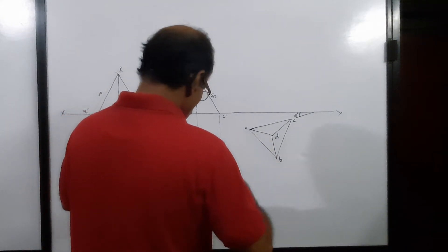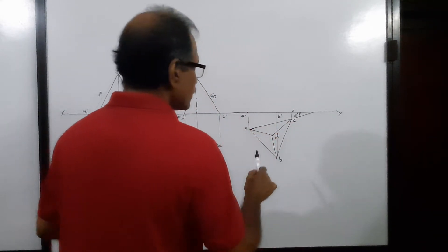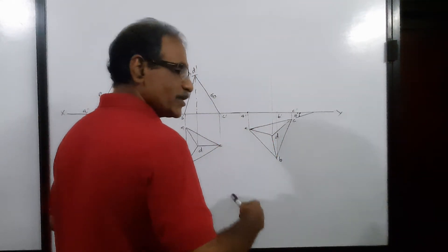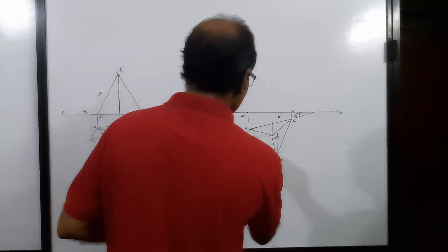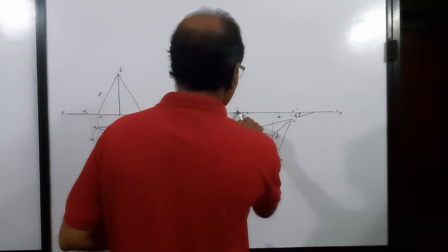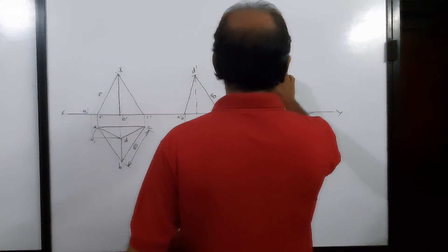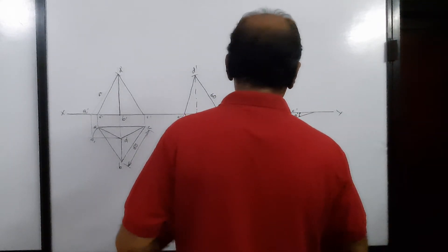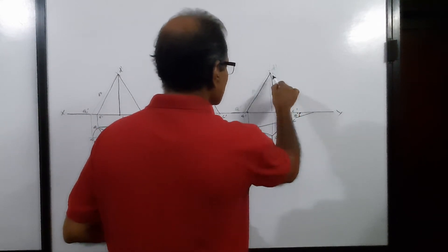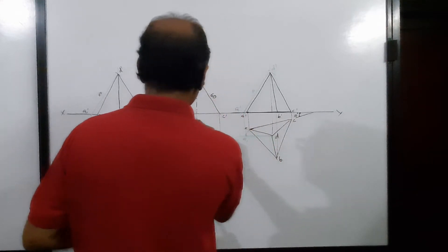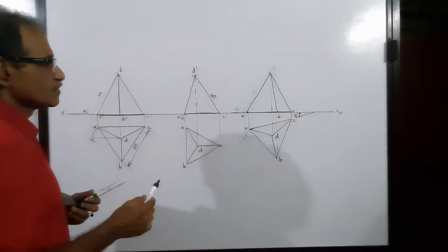In the third case, project through A to get A dash, through B to get B dash, through C to get C dash, and through D to find D dash. To find D dash: draw a horizontal line through D, use D as center and DA as radius to cut an arc at A1, project A1 to the XY line to get A1 dash, then with A1 dash as center and 60 as radius, cut an arc to get D dash. This distance is 60. Connect D dash to A dash, B dash, and C dash.